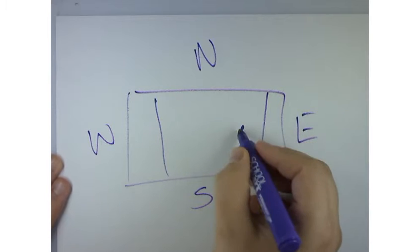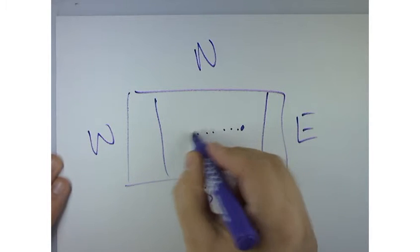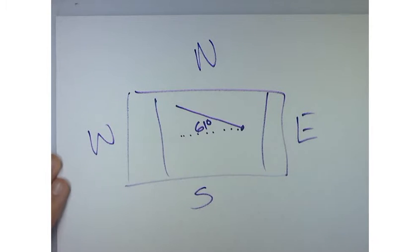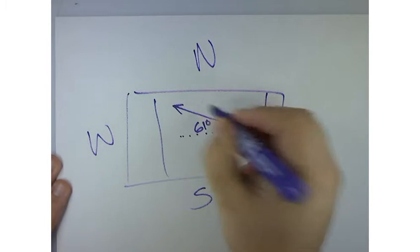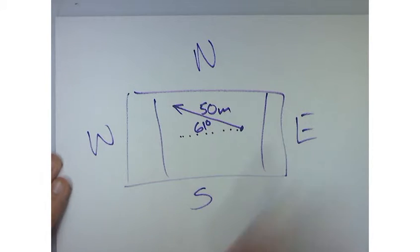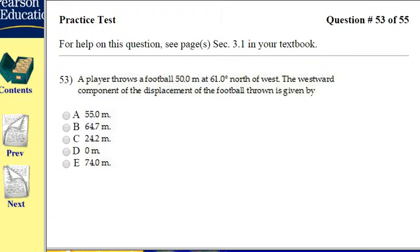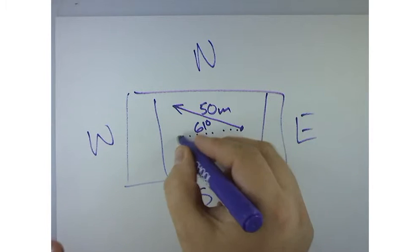So he threw it 61 degrees north of west for a magnitude of 50 meters. And so the question wants us to find the westward component. So I need to find this portion right here.